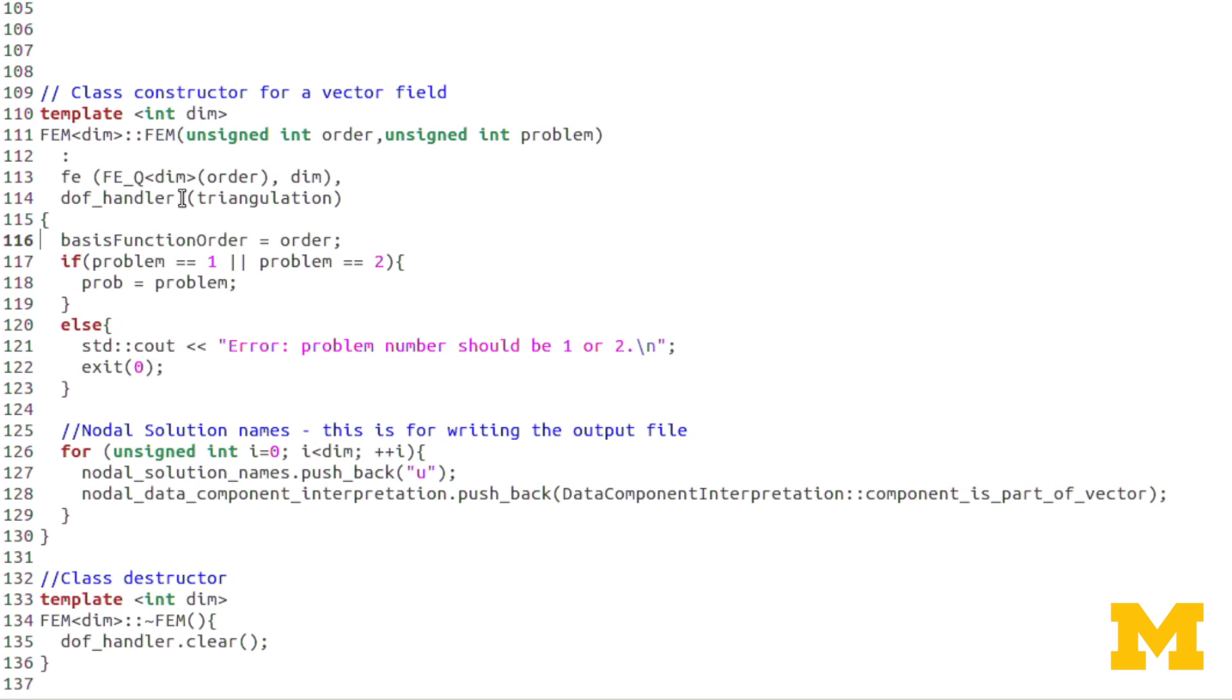DOF handler now will take in triangulation. Triangulation, again, was the mesh, or holds the information about the mesh. And DOF handler holds information about the degrees of freedom, and obviously they're related.